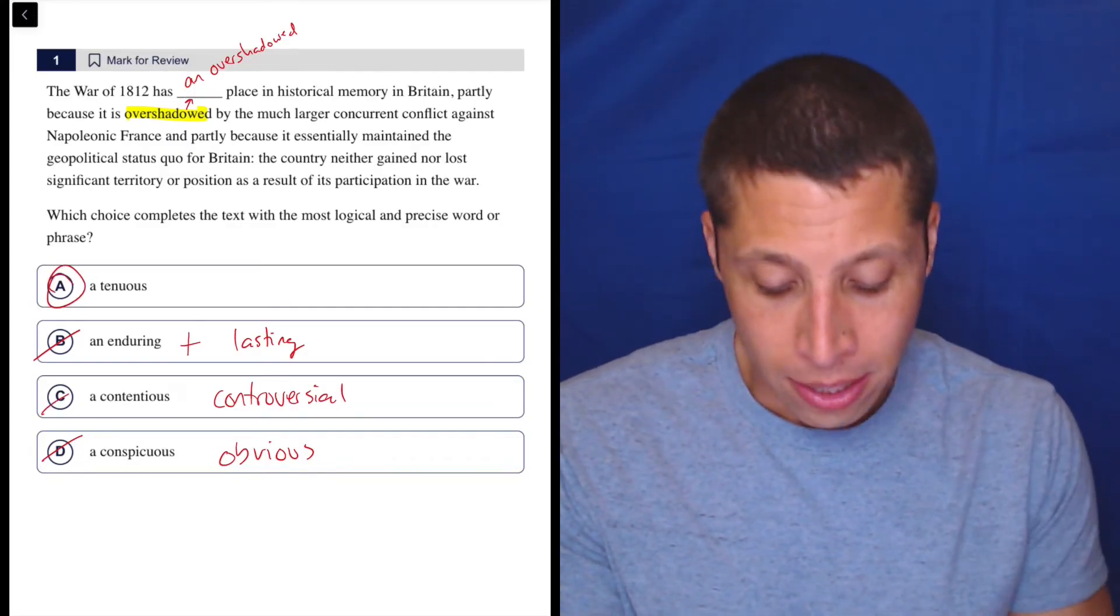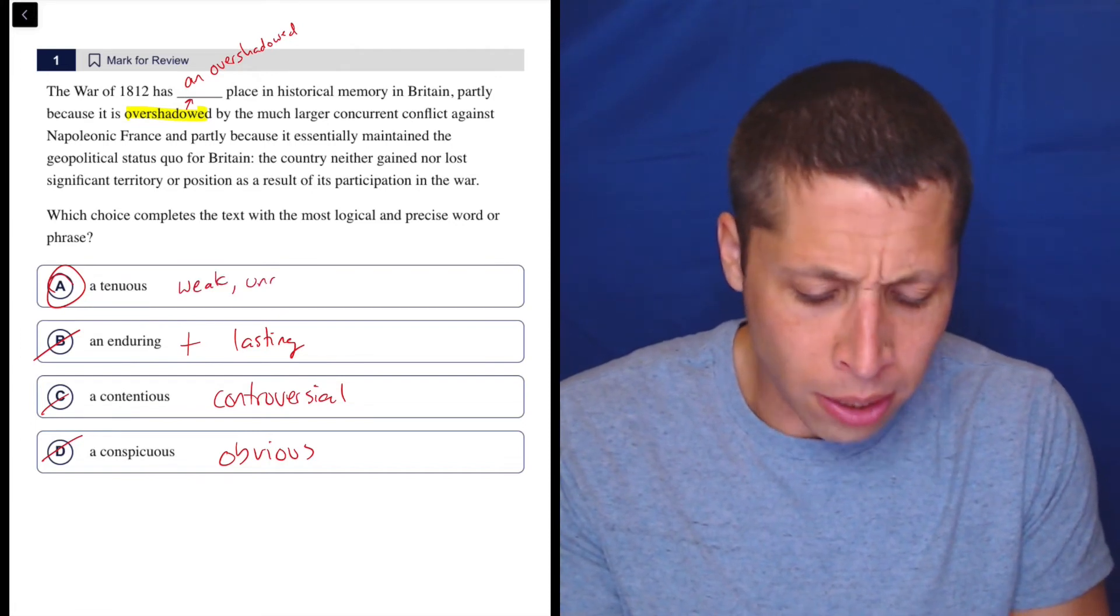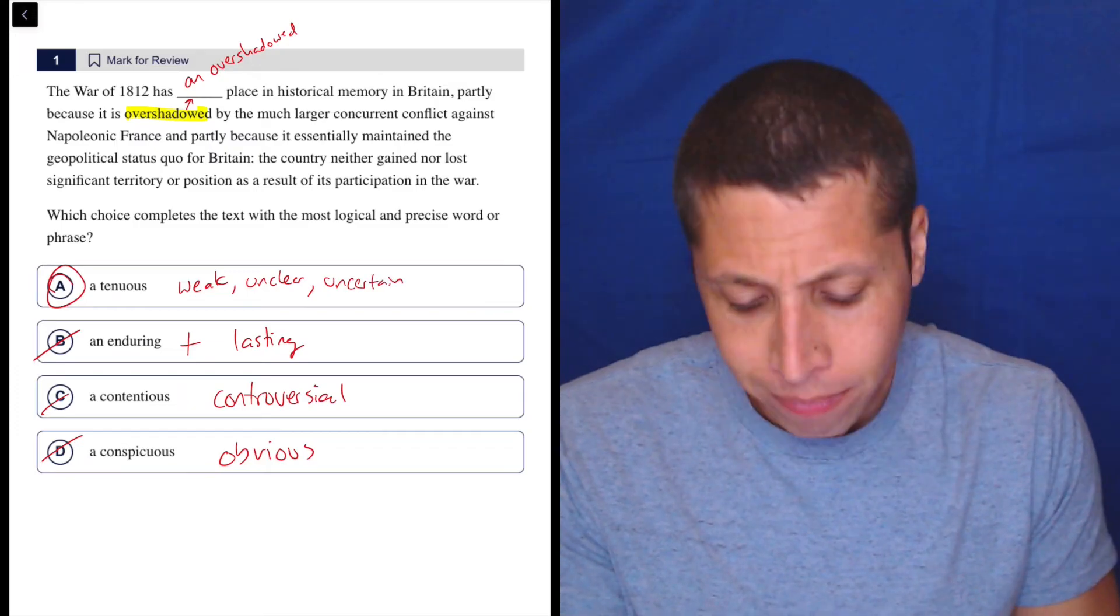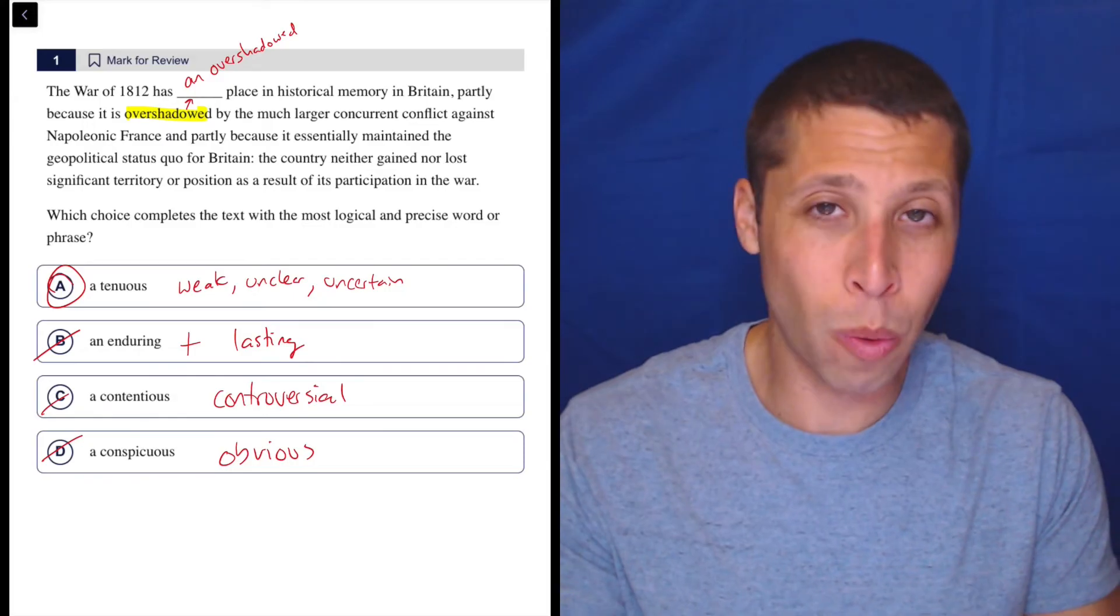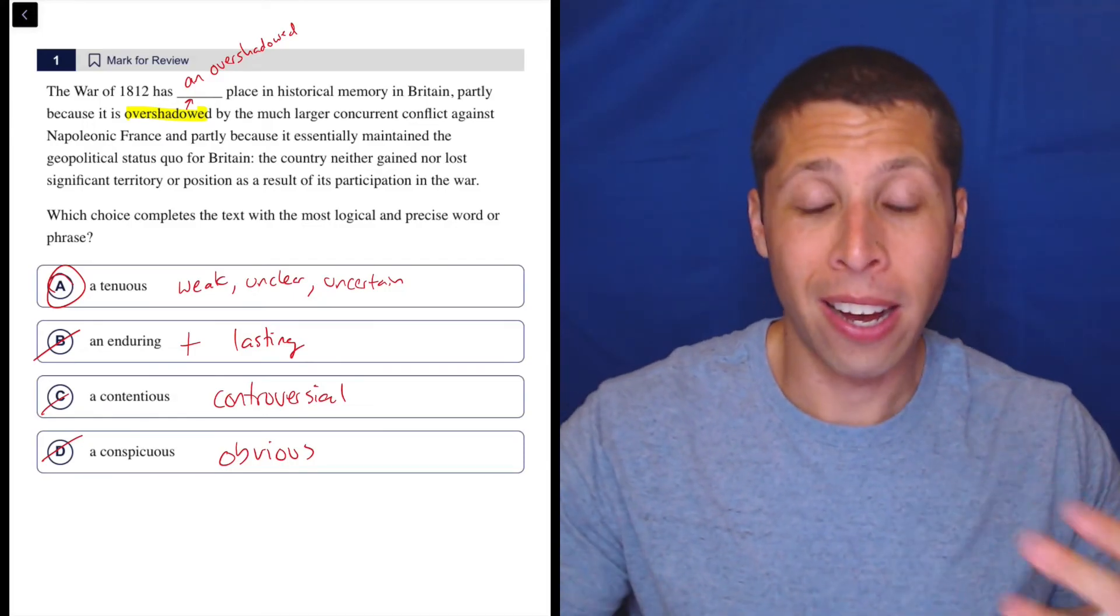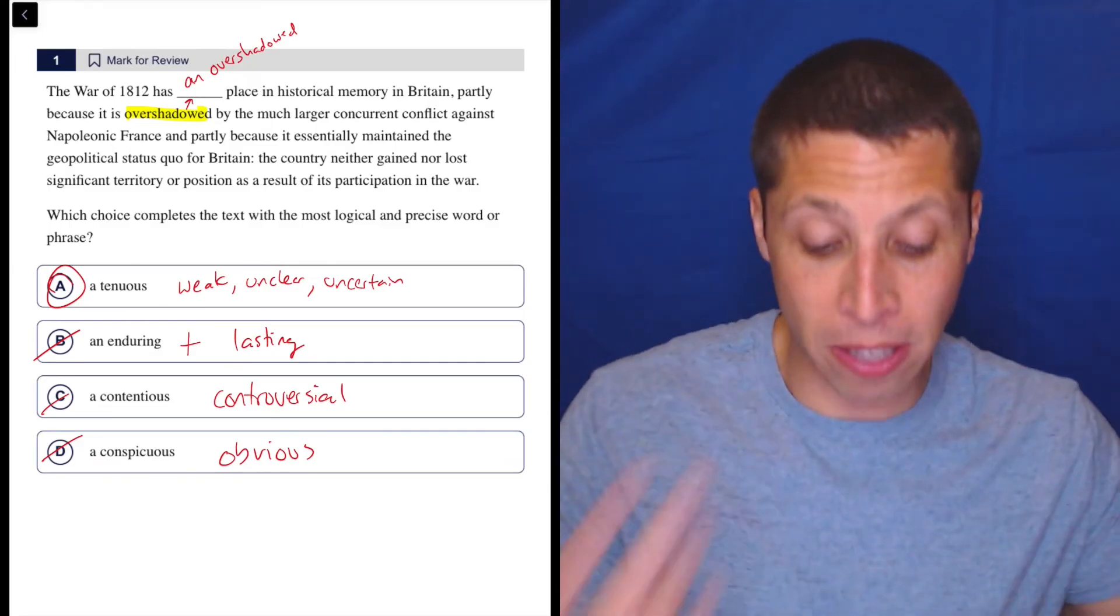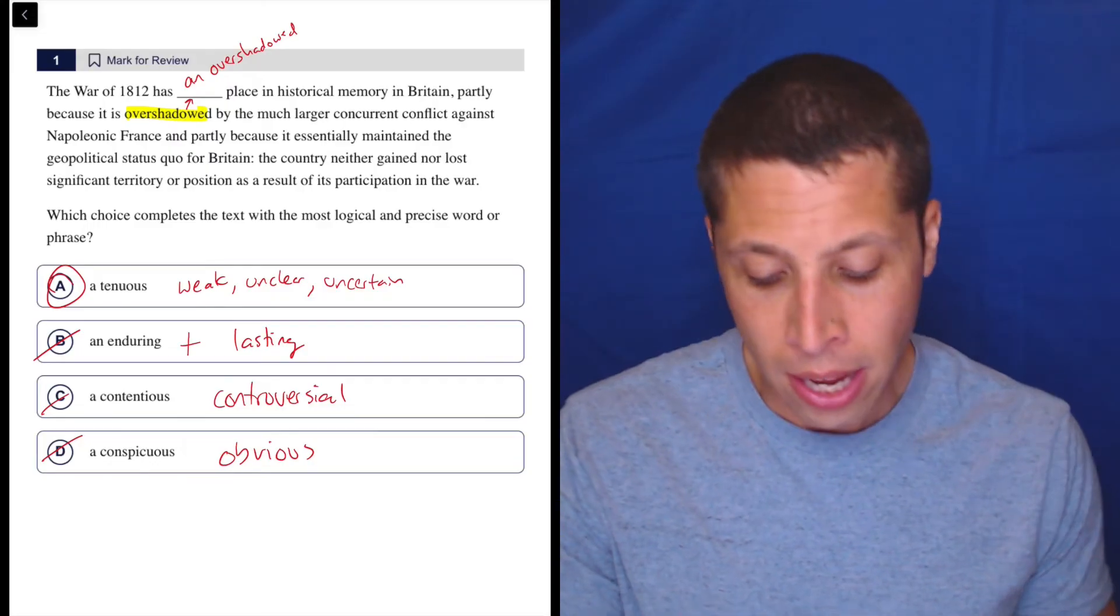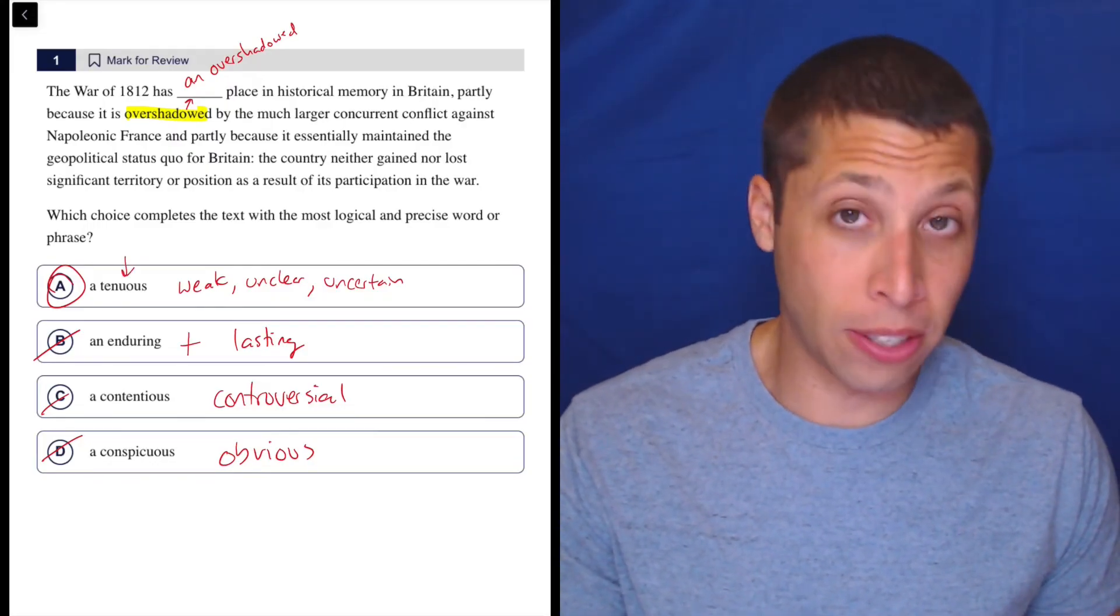Tenuous is the answer. Tenuous kind of means something like weak or unclear, uncertain. Basically what they're saying here is that the War of 1812 is kind of this vague, minor thing in the history of Britain. It is overshadowed by this much more important conflict in France, Napoleonic France. Tenuous is a good word to know. It is definitely a word we could see on an SAT.